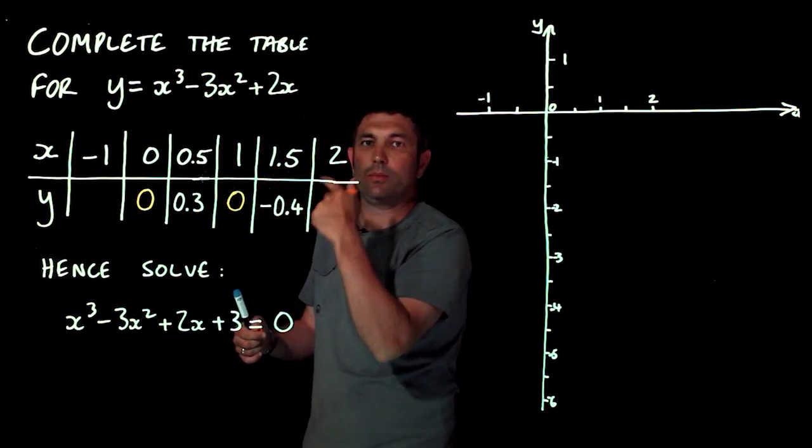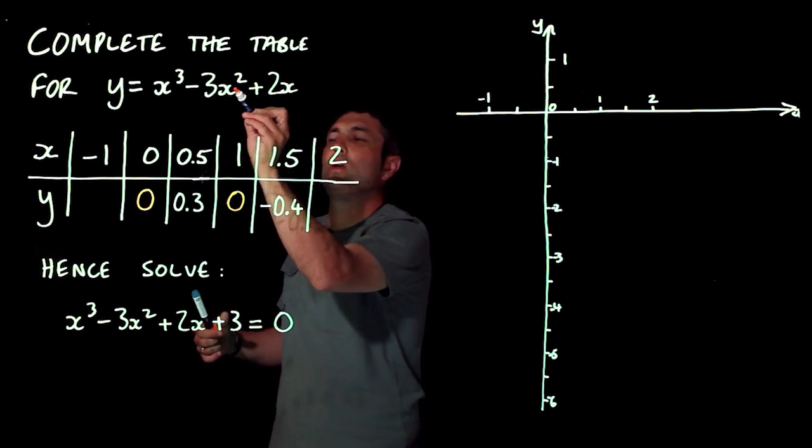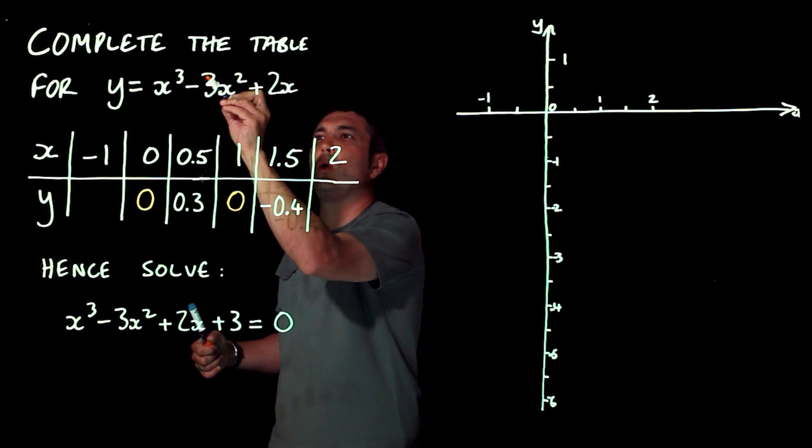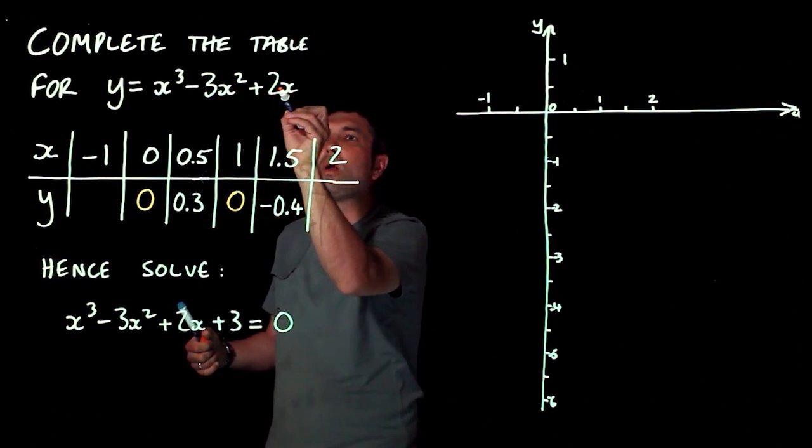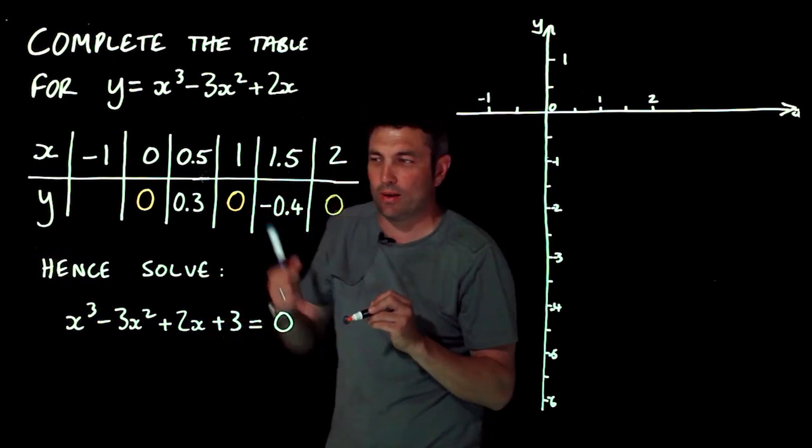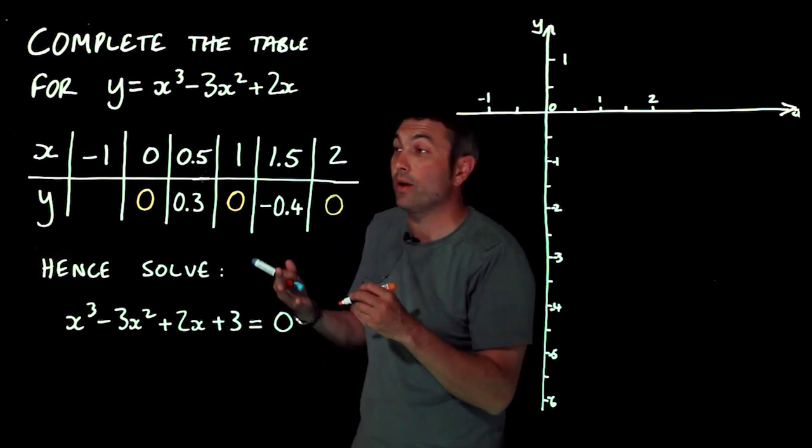Two cubed, two times two times two, eight. Minus two squared times three. So two squared is four, times three is 12, so eight minus 12 is minus four, plus two lots of two. Forget my pattern theory. That's not right in this case, but it's often worth looking for patterns.